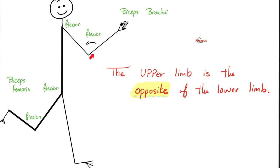Moreover, when I ask you to flex the elbow joint, your forearm is going to move forwards and upwards. But when I ask you to flex the knee, the leg is going to move backwards. Where is your biceps brachii? It's anterior. Where is your biceps femoris? It's posterior. Medicine makes so much sense once you understand what you're talking about.